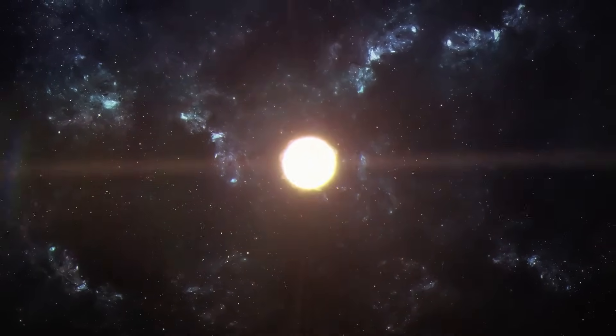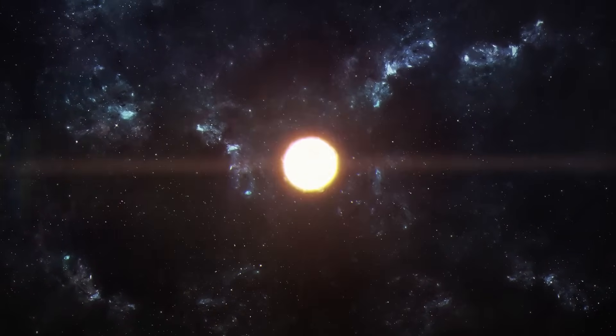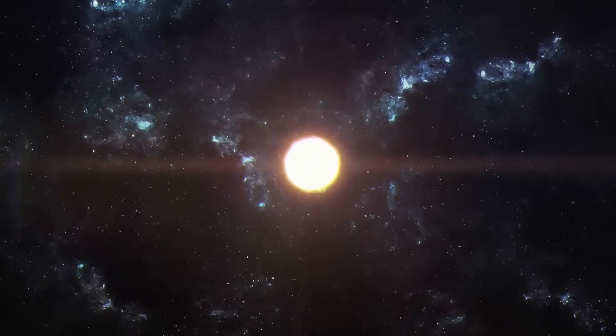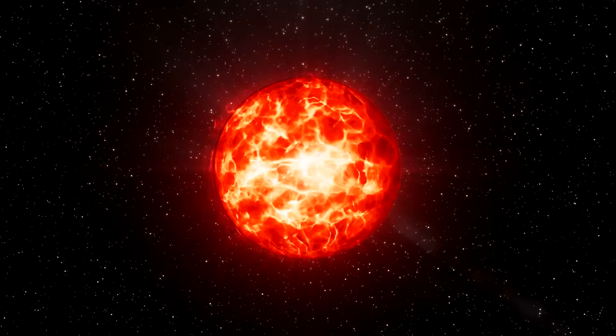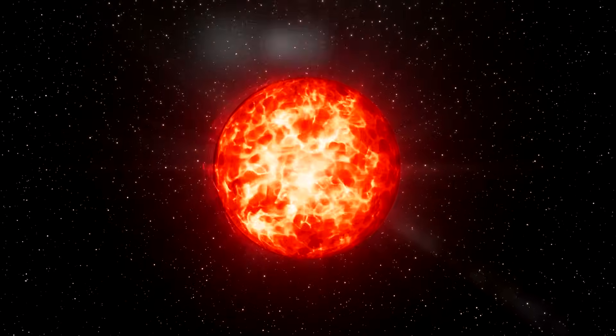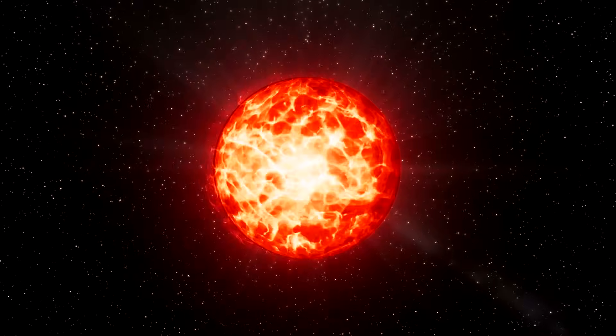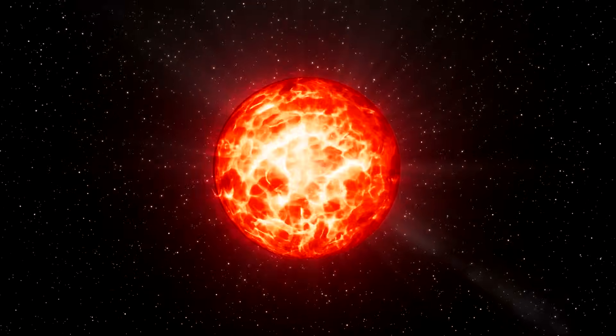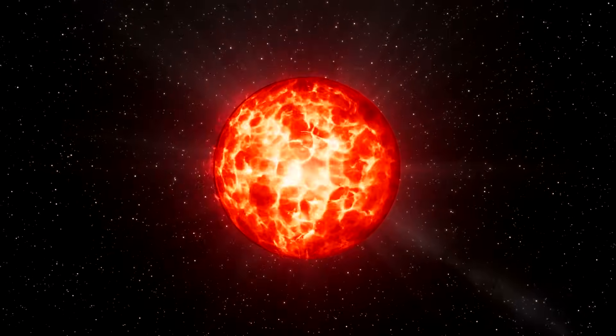The companion star orbiting J0952-0607 is a tragic cosmic victim. With only about 0.02 solar masses remaining, roughly 20 times the mass of Jupiter, this star has already lost over 95 percent of its original mass to the voracious neutron star.